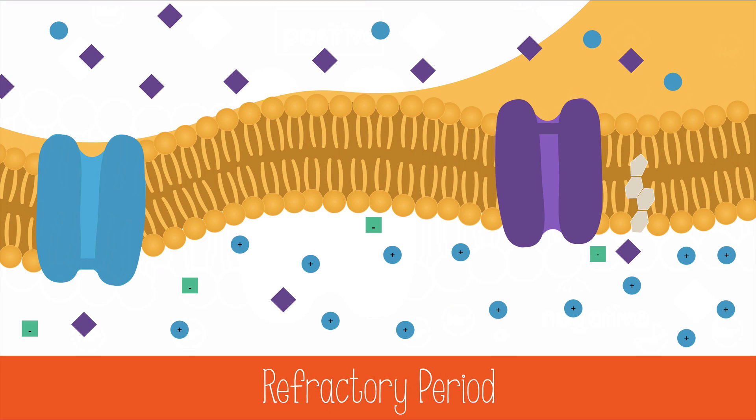At this time, you might think that the cell is ready to receive another signal, but it can't. If the sodium gates opened, the sodium ions would not move. In order for ions to move through their channels, they have to be able to move down the electrochemical gradient.